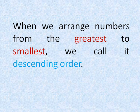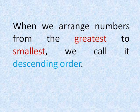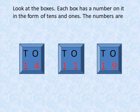When we arrange numbers from the greatest to smallest, we call it descending order. Look at the boxes.